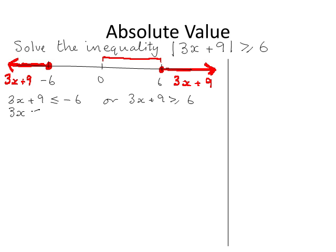Subtracting 9 from both sides of the inequality and then dividing both sides by 3 gives x less than or equal to minus 5.